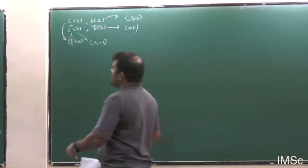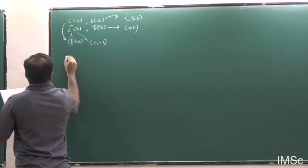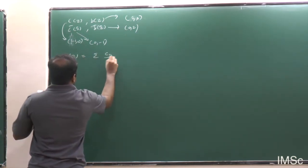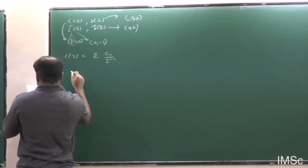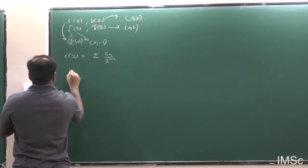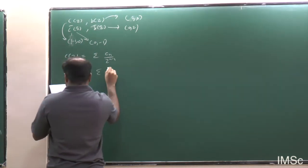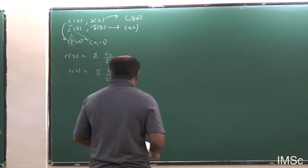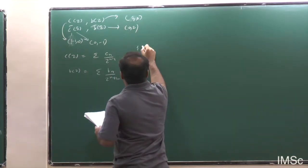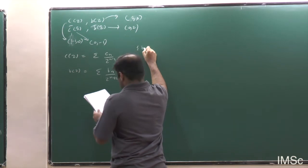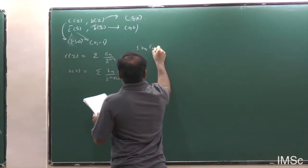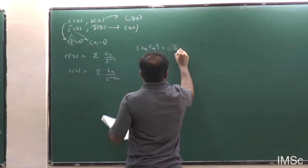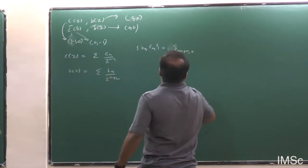You can write down the mode expansion: C(c) = Σ C_n · c^(n−1) and B(c) = Σ B_n · c^(n+2). They satisfy the anticommutator {B_n, C_m} = δ_{n+m, 0}.